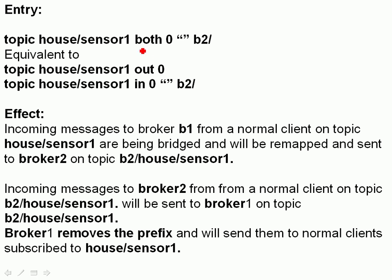Here's another example with a prefix. We're using 'both' with a remote prefix of 'B2', equivalent to separate 'in' and 'out' entries. The effect is: incoming messages to broker 1 on topic 'house/sensor1' are bridged, remapped, and sent to broker 2 on topic 'B2/house/sensor1'. Anything else coming into broker 1 isn't bridged. Incoming messages on broker 2 on topic 'B2/house/sensor1' are sent to broker 1, where broker 1 removes the 'B2' prefix and forwards to normal clients subscribed to 'house/sensor1'.